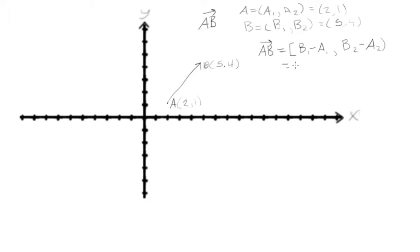If we look at this, the first component is 5 minus 2, and the second component is 4 minus 1. We find out that vector AB has the components [3, 3].